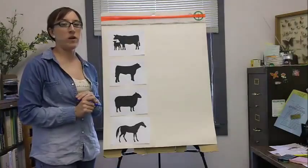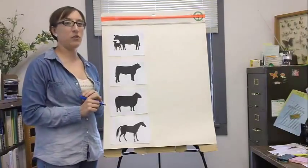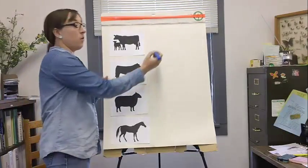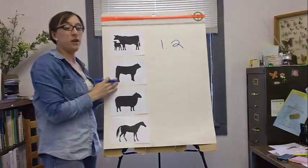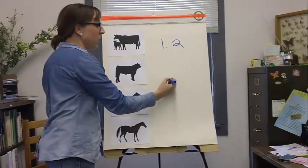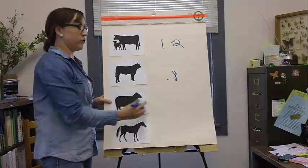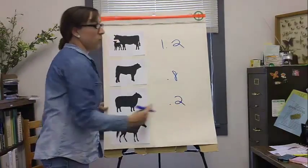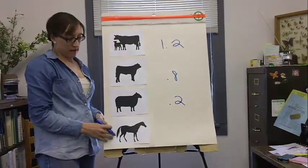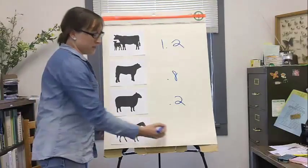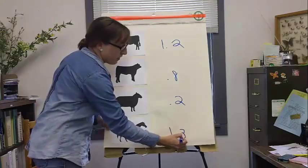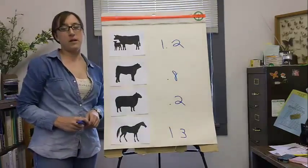If you have a herd of 1,200 pound cows, your animal unit equivalent for each cow is 1.2. An 800 pound steer is 0.8 animal unit equivalents. One sheep is 0.2 animal unit equivalents, and a mature saddle horse is about 1.3 animal unit equivalents.